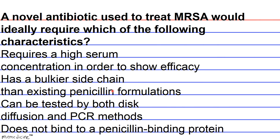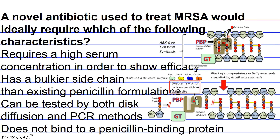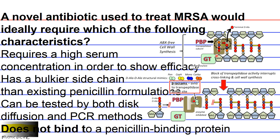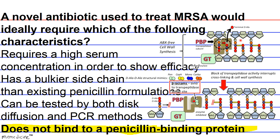The method of testing that can be used for the antibiotic is not going to be the foremost consideration. An antibiotic that acts at a low, not a high, serum concentration would be preferable in order to avoid potential side effects. The size of the molecule's side chain doesn't matter as much as the requirement of a penicillin binding protein. The ideal antibiotic would have a mechanism of action that does not require the penicillin binding protein at all — it would find some other means of attack. The correct answer is D.